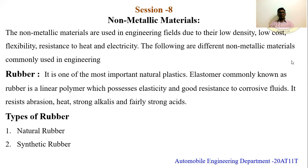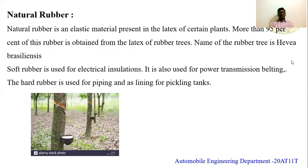There are two types of rubber: natural and synthetic. Natural rubber is found in the latex of certain plants — specifically the rubber tree. The rubber tree is called Hevea brasiliensis. These trees are mostly found in Brazil, Malaysia, Sri Lanka, and some parts of Europe. Natural rubber comes in soft and hard forms: soft rubbers are used for electrical insulation, while hard rubbers are used in belting for power transmission and piping.